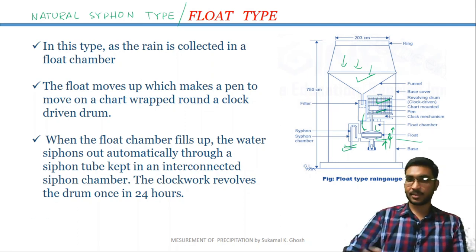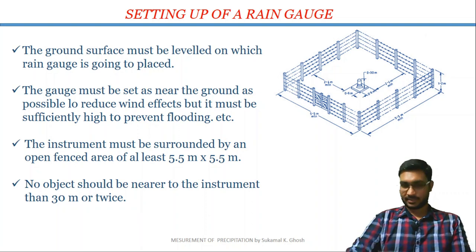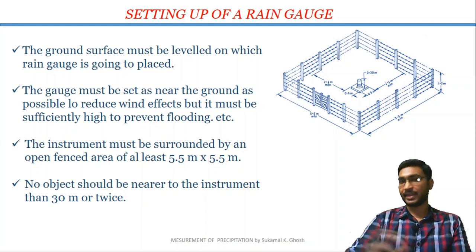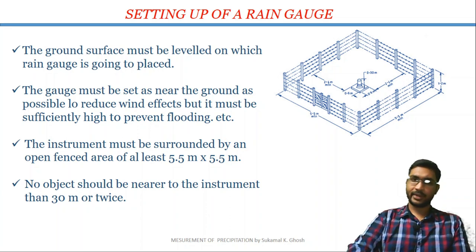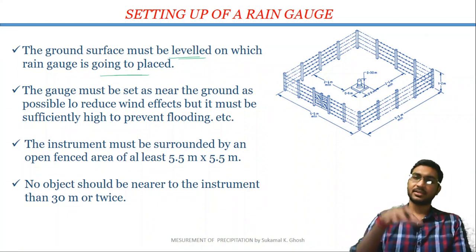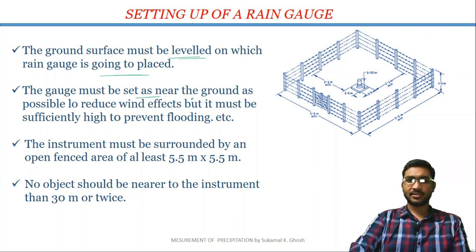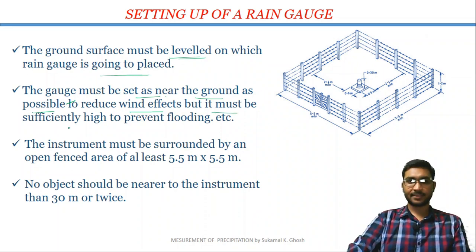Now we have discussed the various types of rain gauges. But we should know what precautions to take while setting up a rain gauge. The first point is the ground surface must be leveled on which the rain gauge is going to be placed. The second point is the gauge must be set as near the ground as possible to reduce the wind effect, but it must be sufficiently high to prevent flooding.